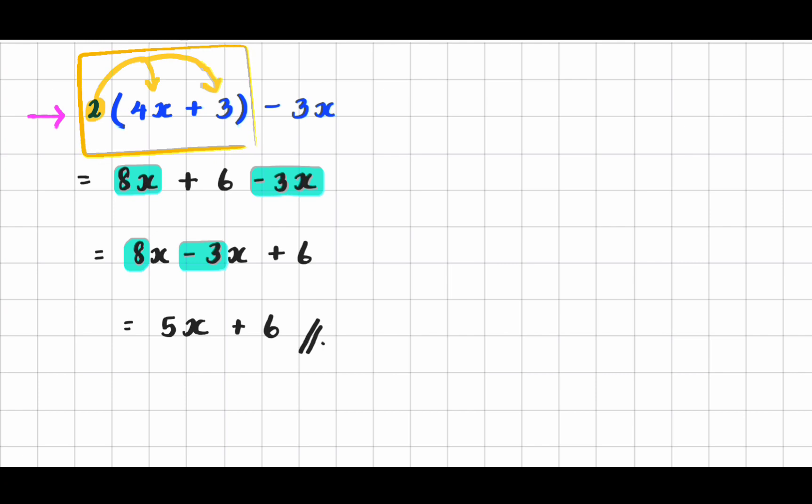And done. So, to distribute you multiply the number outside of the brackets by each term that's inside. And to combine like terms you look for anything that has the same variable and same power. And these both have an imaginary one, that's why I say same power. You combine their coefficients, keep their variable.